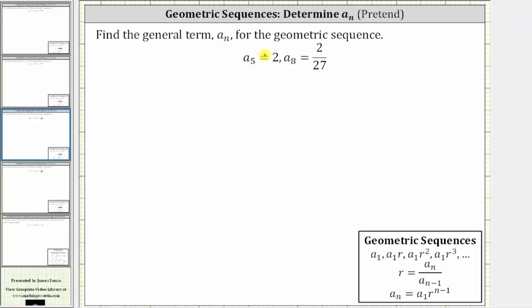We're asked to find the general term a_n for the geometric sequence where a_5 equals 2 and a_8 equals 2 divided by 27. Looking at the formulas below, notice to find the formula for a_n, we need a_1, the first term, as well as the common ratio r. In this case, we don't have either.